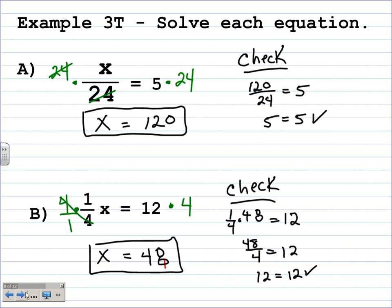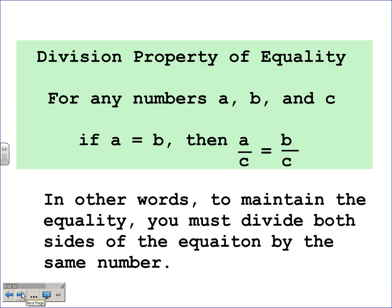The division property of equality: for any numbers a, b, and c, if a is equal to b, then a divided by c is equal to b divided by c. It's important to note that c cannot equal 0 because division by 0 is undefined. We have to divide both sides by the same number, just like we added, subtracted, and multiplied both sides equally before.